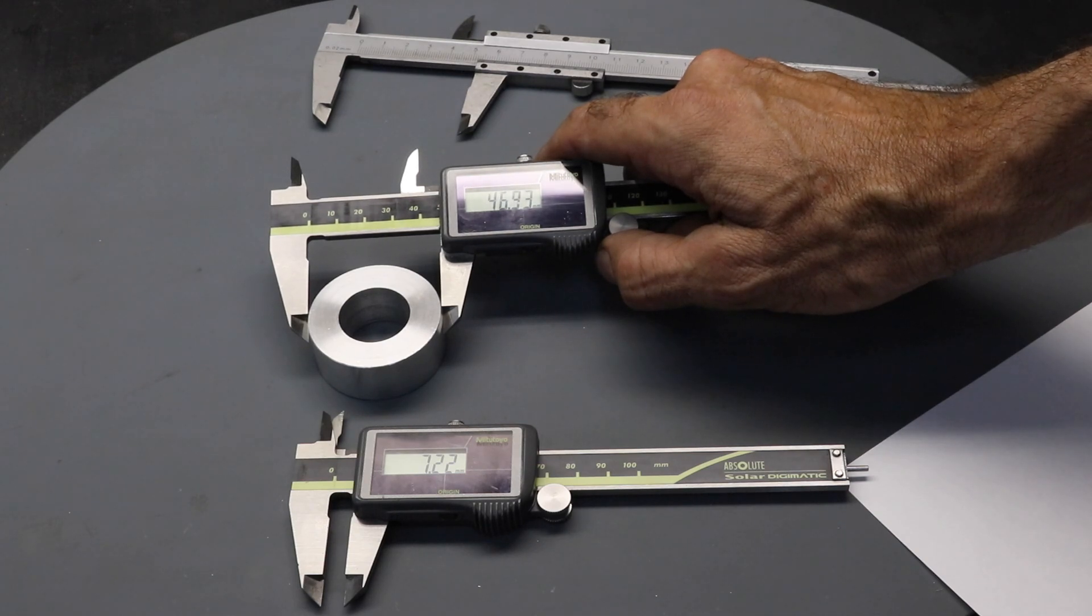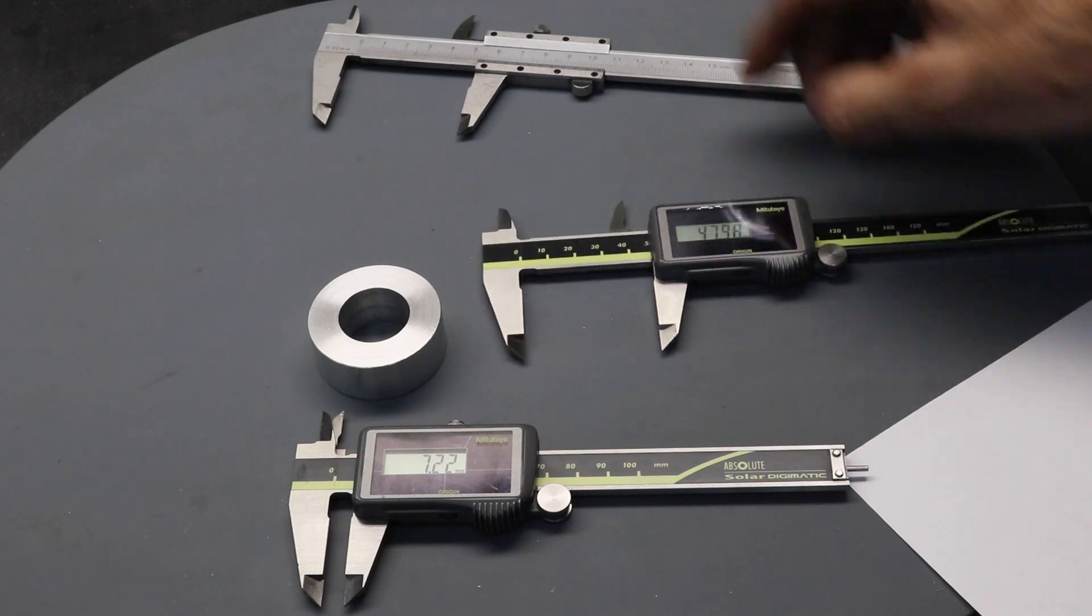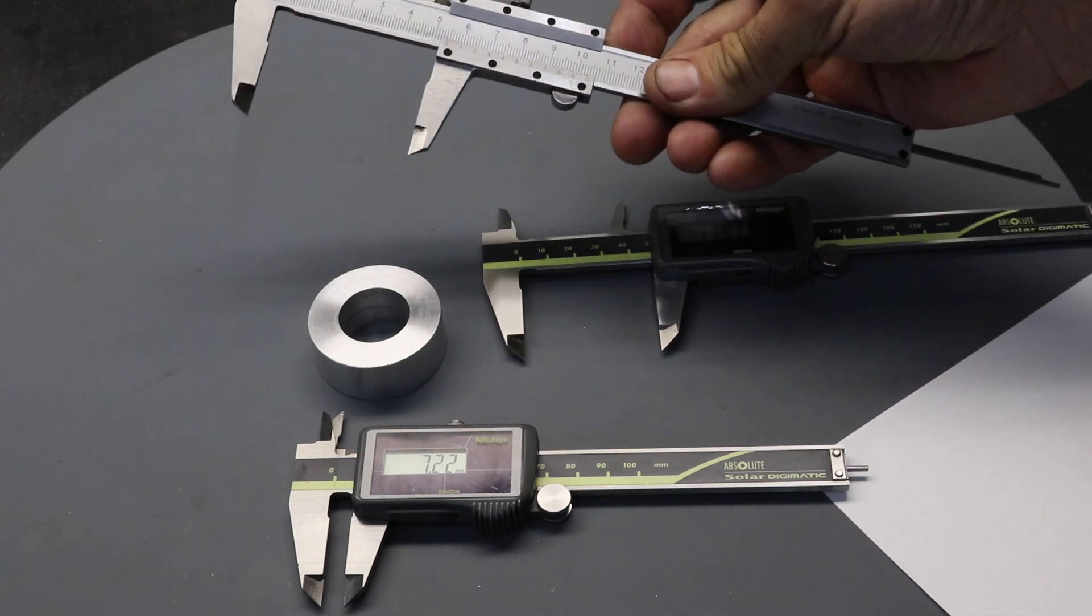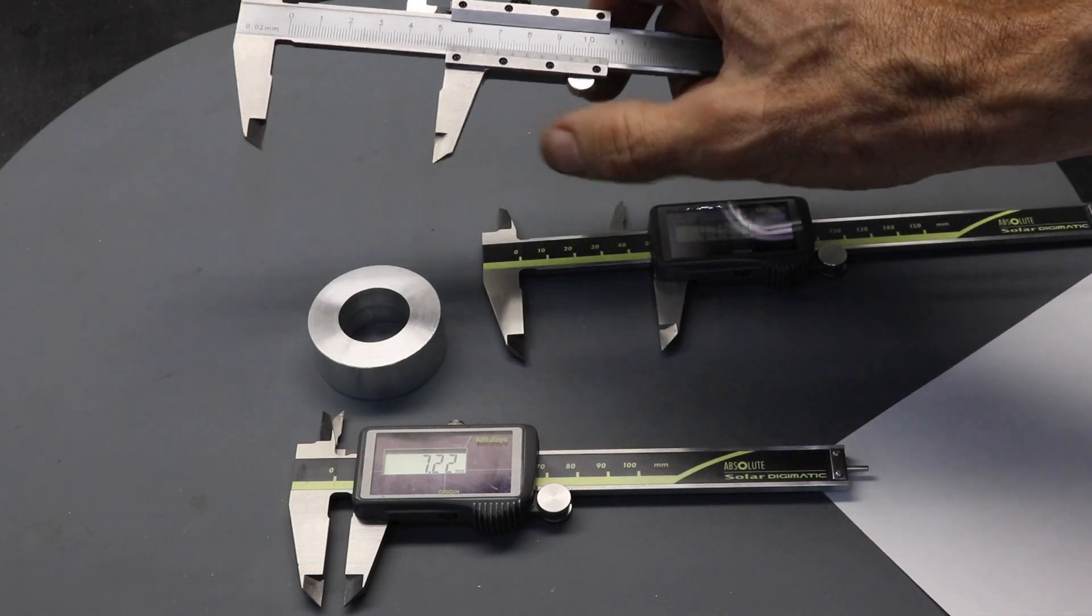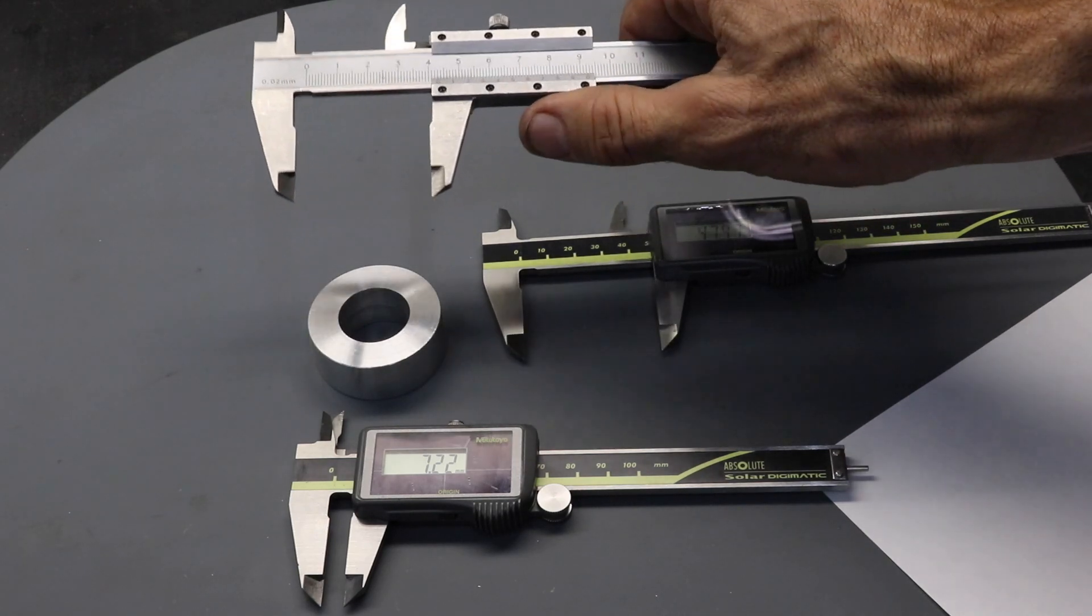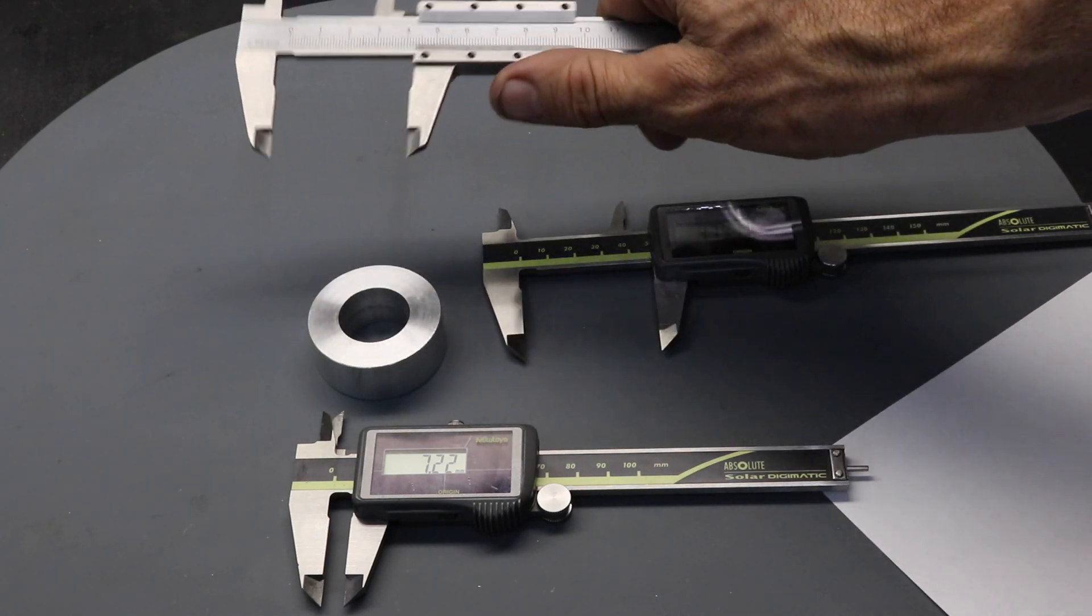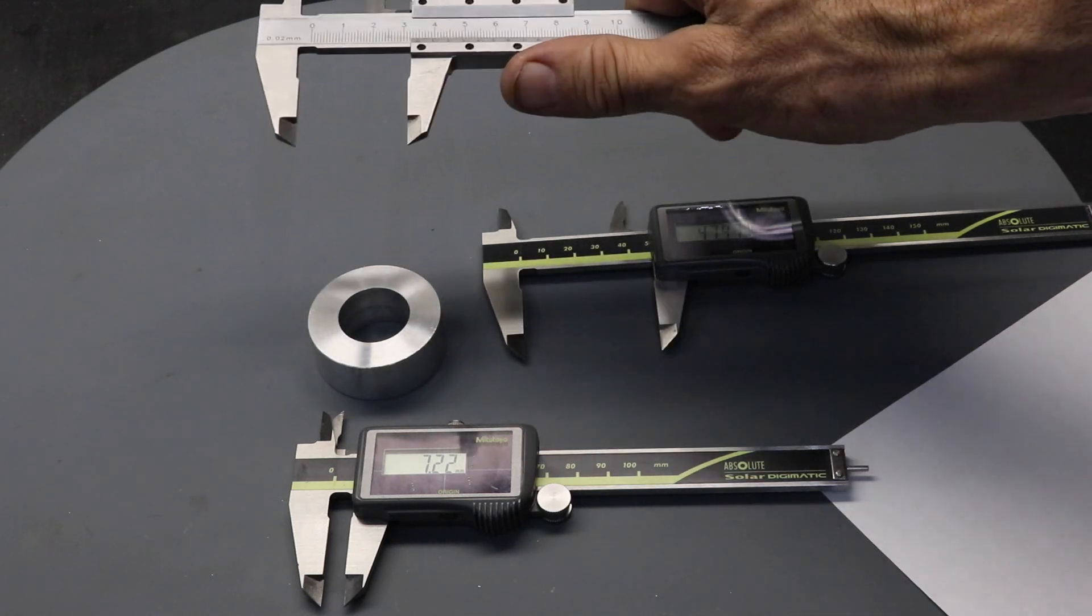It's important that you apply the same amount of pressure for each measurement you take. If you apply more or less, the measurement may change. The same applies to the vernier calipers. These don't have a thumb wheel, but you apply pressure using the slide here. And it's important the amount of pressure is the same for each measurement.